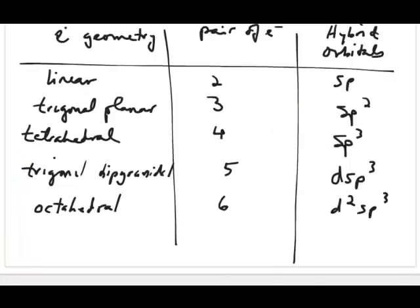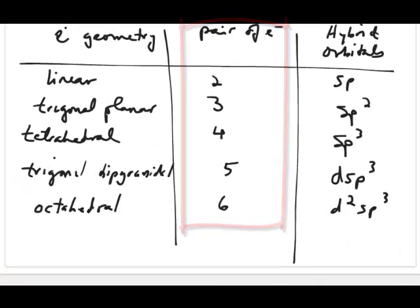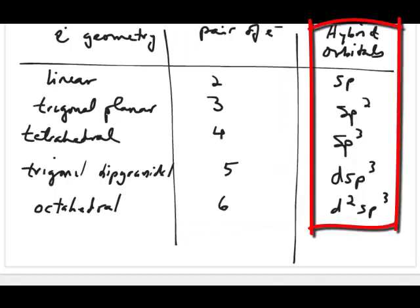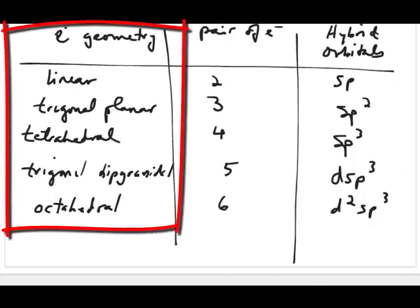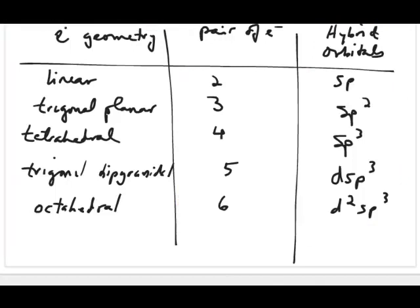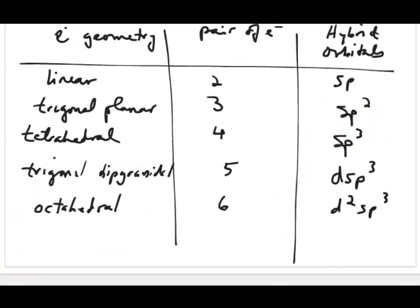If you have 2, 3, 4, 5, or 6 pairs of electrons around the central atom, there is a specific hybrid orbital associated with each count. Those numbers of electron pairs also correspond directly to the electron geometry. So you first figure out the electron geometry, and then use that to determine what hybrid orbitals the central atom needs to use.